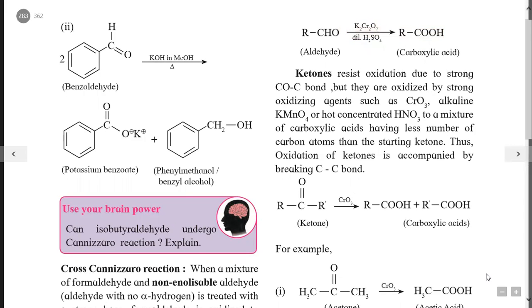Alternatively, when treated with hydrazine followed by heating with sodium or potassium hydroxide in a high boiling solvent like ethylene glycol, it is called Wolff-Kishner reduction. In both reactions, the oxygen atom of the carbonyl group is replaced by two hydrogen atoms.